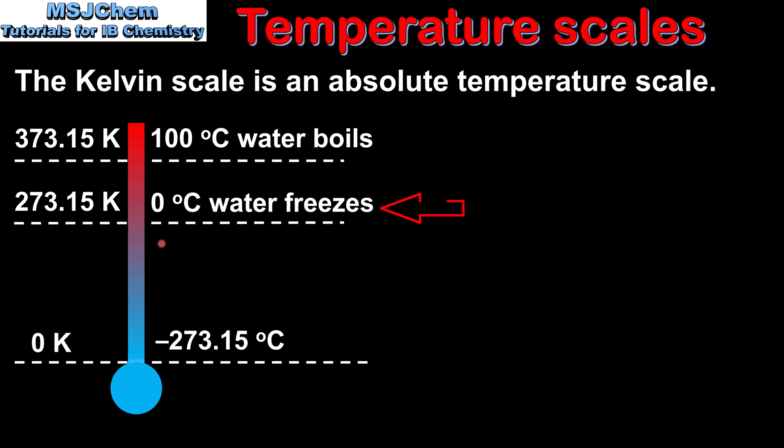Next we have 0 degrees C which is the point at which water freezes, and this is equivalent to 273.15 Kelvin. Then we have 100 degrees C which is the boiling point of water, and this corresponds to 373.15 Kelvin.